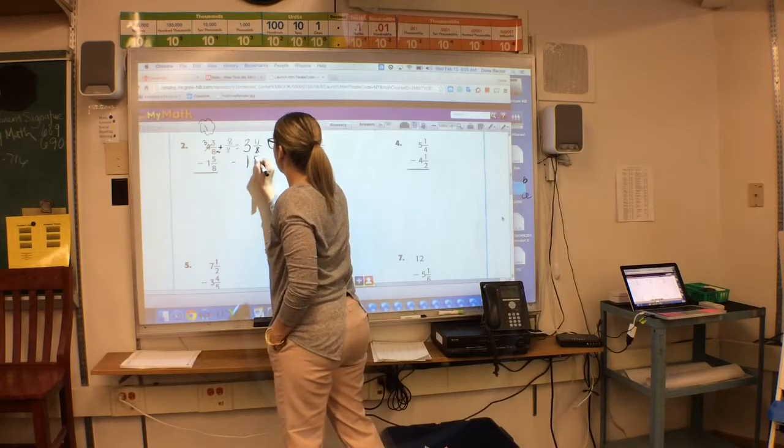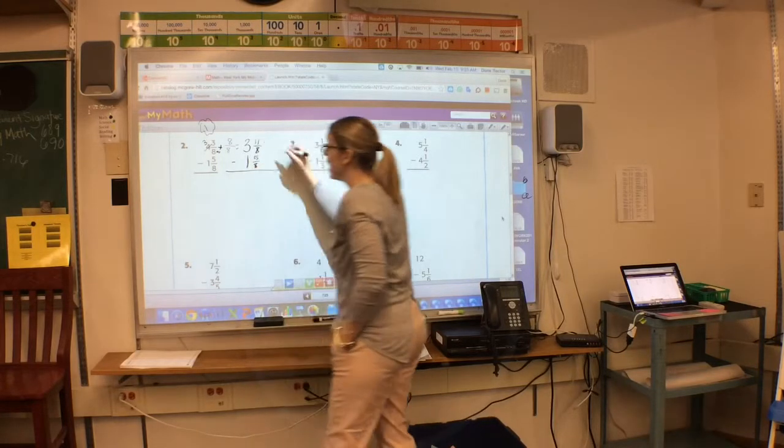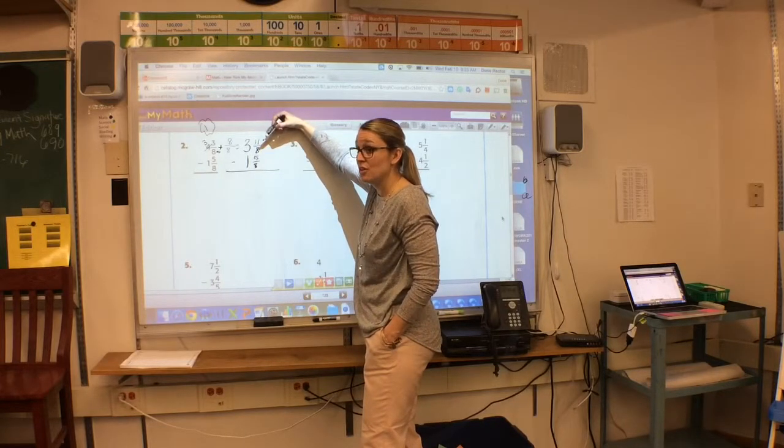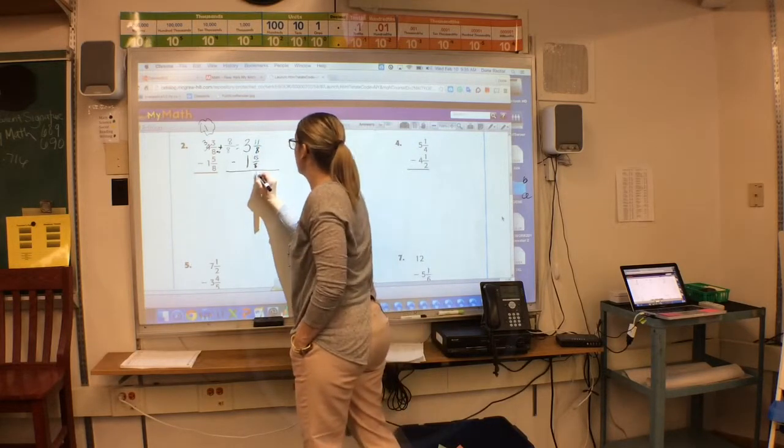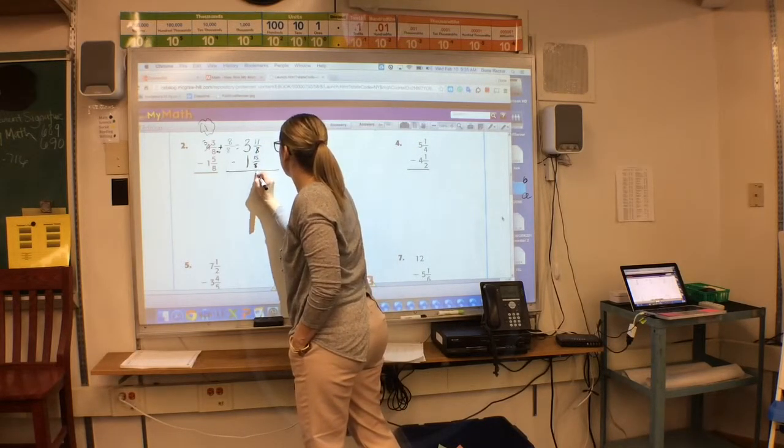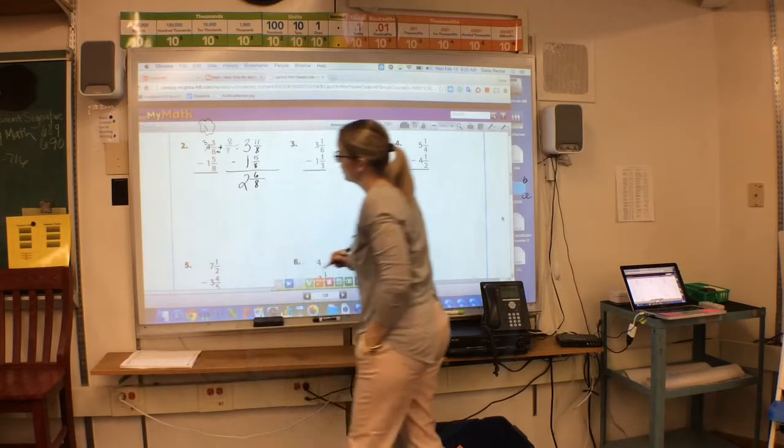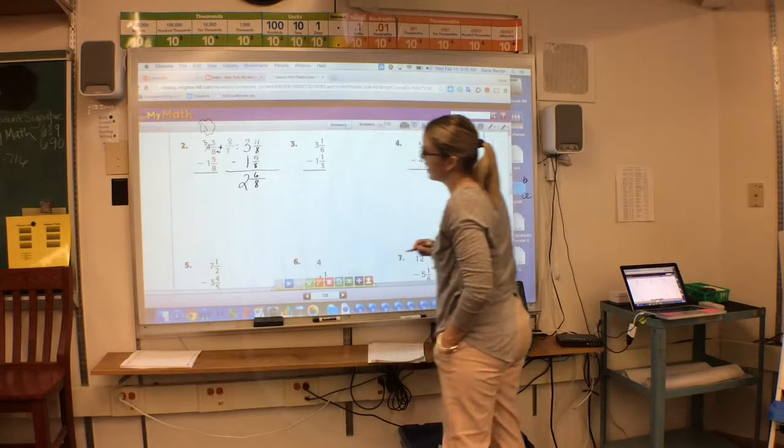Take away 1 and 5 eighths. Yes, I know this is improper, but it's not in my answer. Now, I can subtract. 11 take away 5 is 2 and 6 eighths.